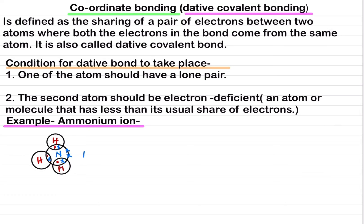Ammonia will combine with the hydrogen ion. The hydrogen ion has no electrons — it is electron deficient. So here we are fulfilling both conditions: nitrogen in ammonia has a lone pair, and the hydrogen ion is electron deficient — one is the electron donor, the other is the electron acceptor.